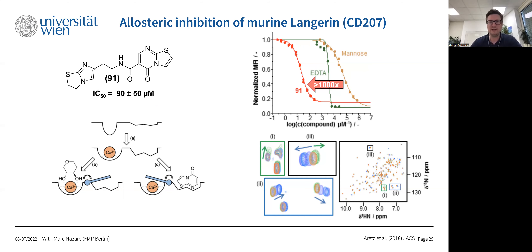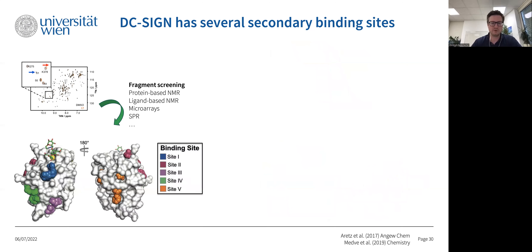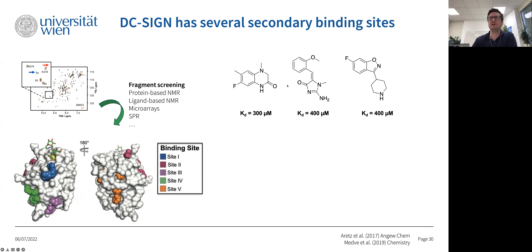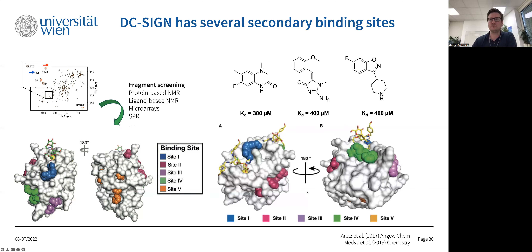For DC-SIGN, a related protein, we have done extensive biophysical screening — protein-based NMR, fluorine and STD NMR, microarrays, and SPR. Out of the full fragment campaign, we identified five secondary sites distributed over DC-SIGN. A few years later, the Frank Fieschi group confirmed some of these binding sites by crystallography, showing their glycomimetic structures fitting into pockets we had predicted. So there are secondary — and most likely allosteric — sites on DC-SIGN as well.